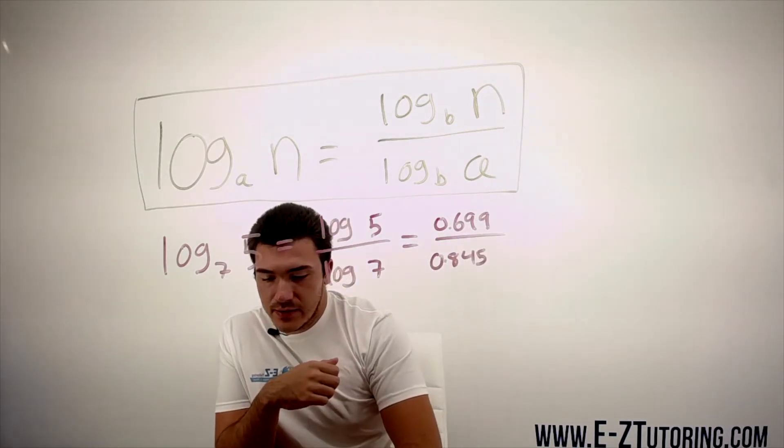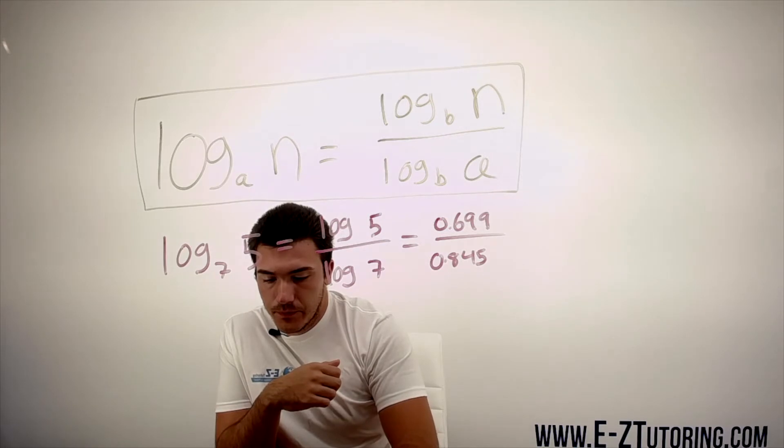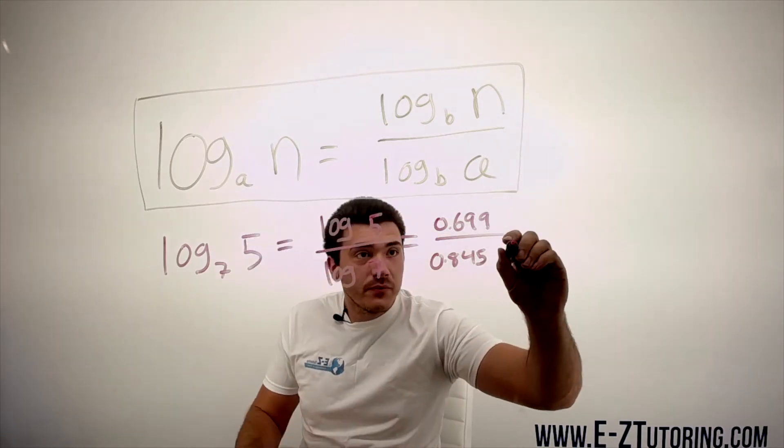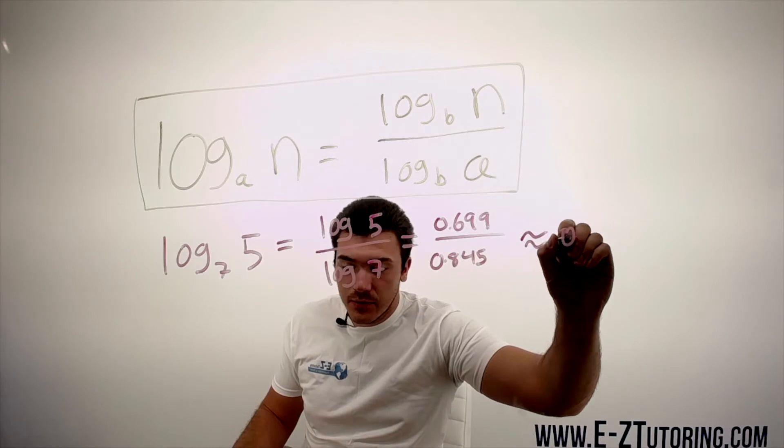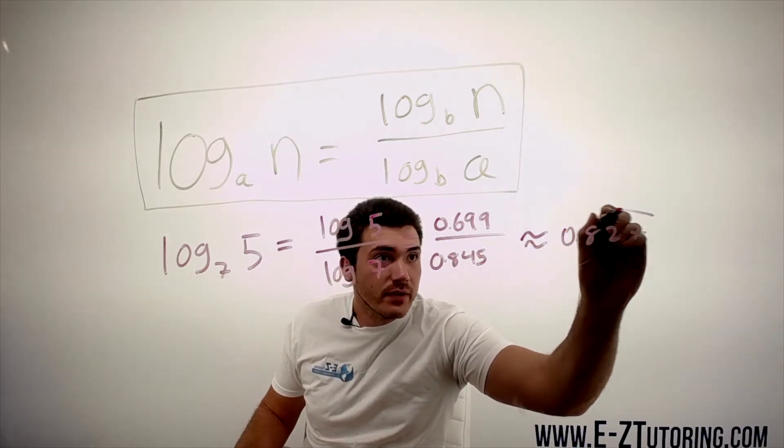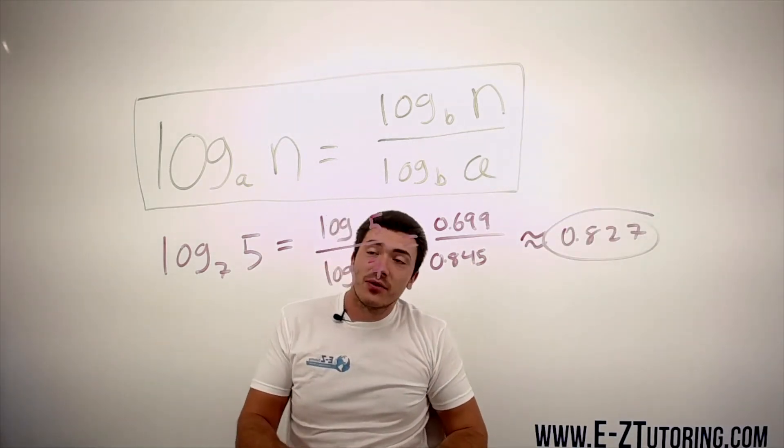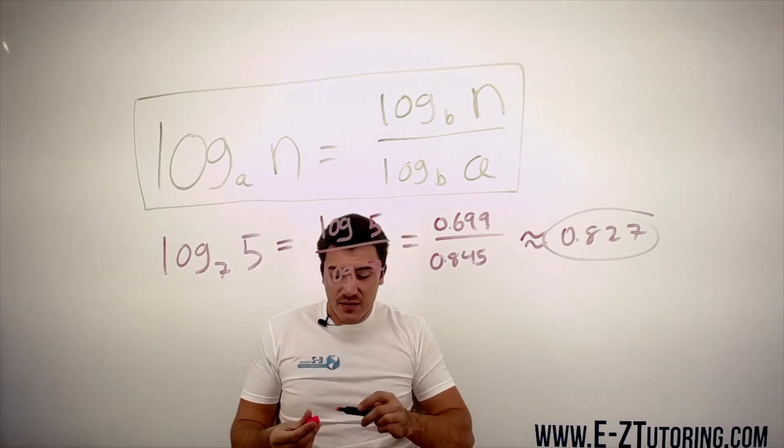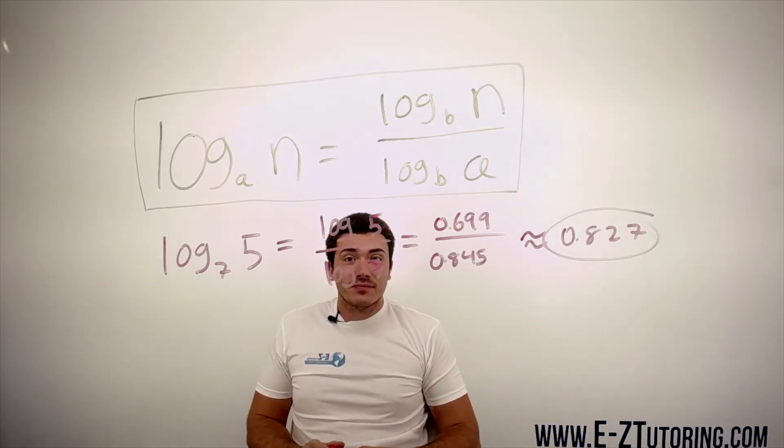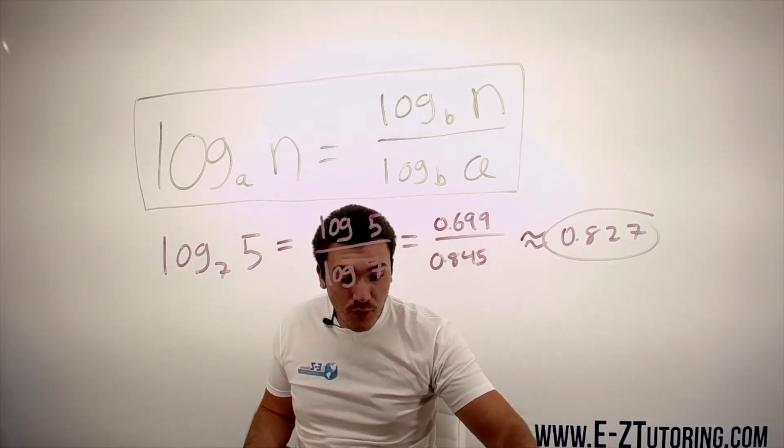Then we divide the two, and we get roughly 0.827. So that's going to be your answer for log base 7 of 5 by using a calculator. This trick is extremely helpful.